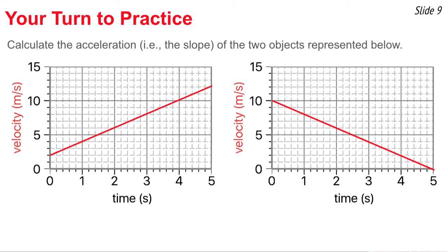Now it's your turn to practice. Here are two velocity-time graphs, and your goal is to calculate the acceleration for the two objects. Get yourself a scratch paper out and make an effort to calculate the acceleration of these two objects by determining the slope value. Remember the three-step method: pick two points whose coordinates are clearly known, write down the coordinates of those points, and then find the change in y divided by the change in x. Pause the video, do your problems, and when you're done press play and we'll see how you did.